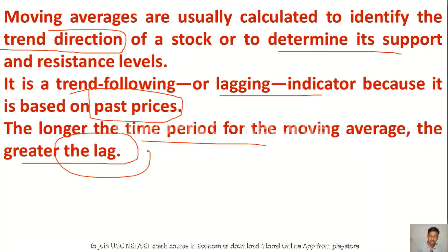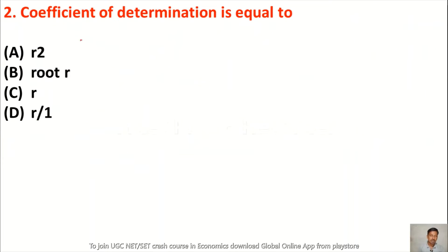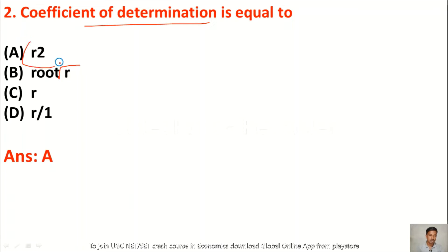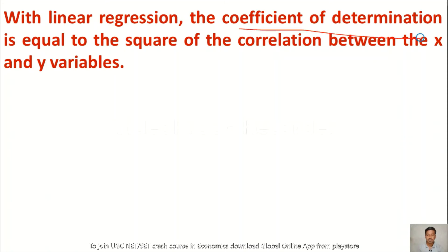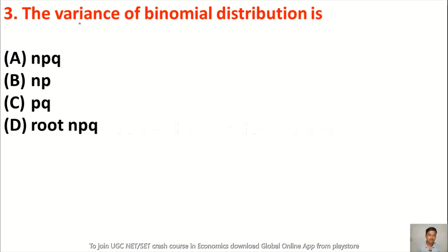Question 2: Coefficient of determination is equal to — option A r-square, option B root r, option C r, option D r divided by 1. The right answer is option A, r-square. The coefficient of determination is equal to the square of the correlation coefficient. R means correlation, and the square of correlation is equal to the coefficient of determination.